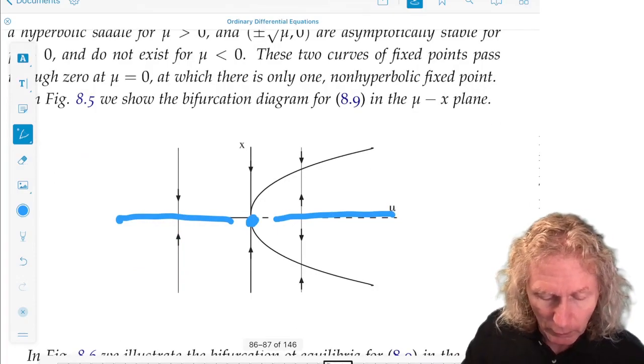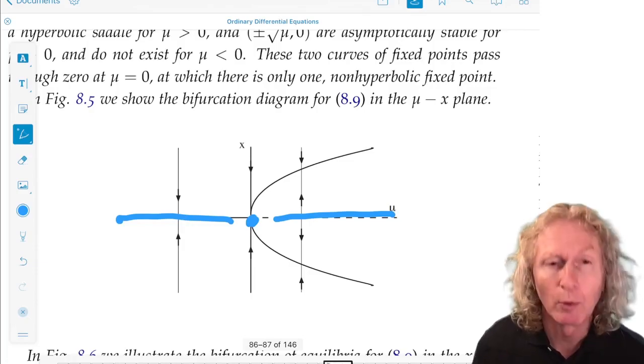And it's the eigenvalue 0, so it's a non-hyperbolic equilibrium. But as μ passes through 0, we get two stable equilibrium.